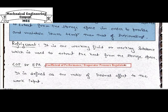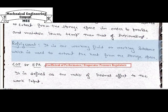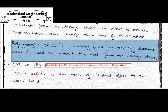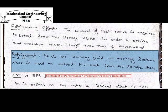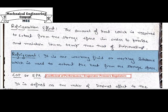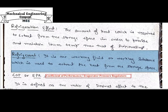What do we mean by refrigerant? This is the basic and most important element which is used to maintain or create a refrigeration effect. It is the working fluid or working substance which is used to extract heat from the storage space. As we discussed in refrigeration effect, we extract heat from storage to maintain its temperature below the surrounding. To extract heat, we need a substance which can do that. That substance — the working fluid — is known as a refrigerant.